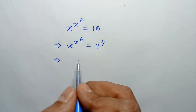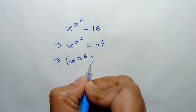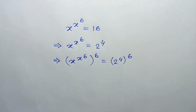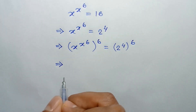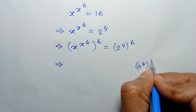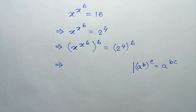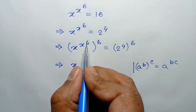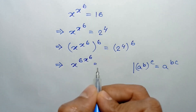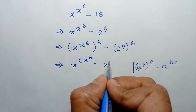Raising both sides to the power 6, we can write x to the power x to the power 6, whole to the power 6, is equal to 2 to the power 4, whole to the power 6. According to the exponential formula, a to the power b, whole to the power c, is equal to a to the power bc, we can write it as x to the power x to the power 6 times 6, which is equal to 2 to the power 4 times 6, which is 24.